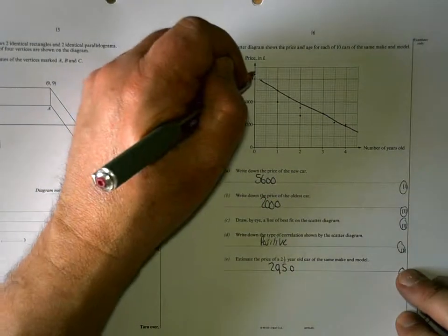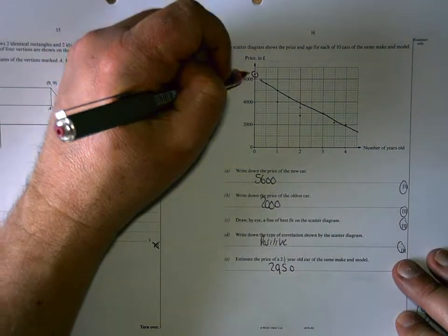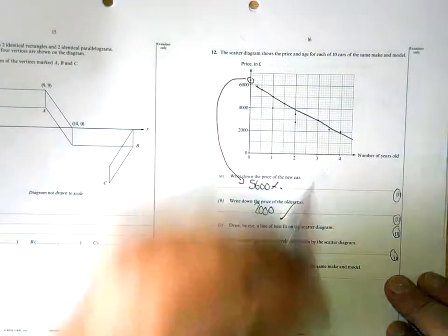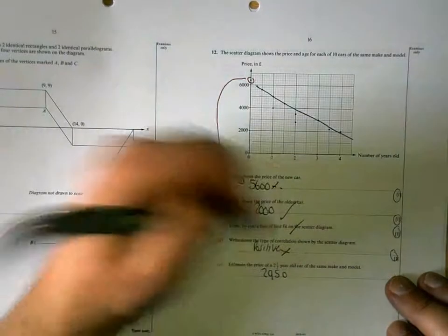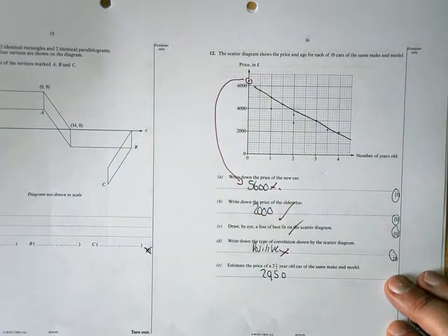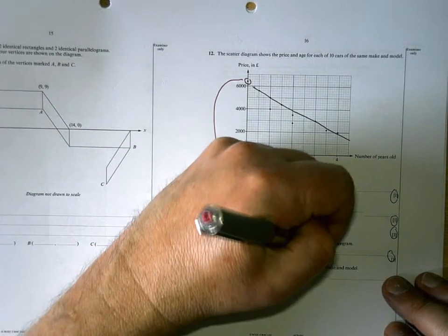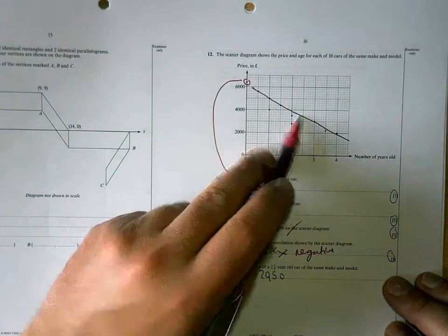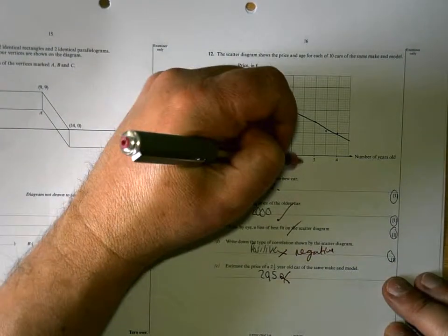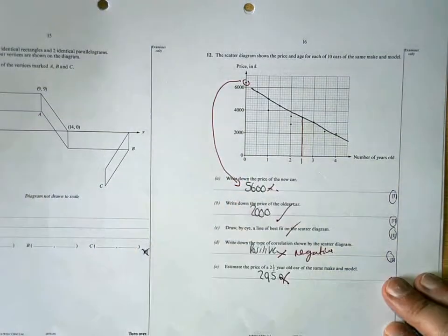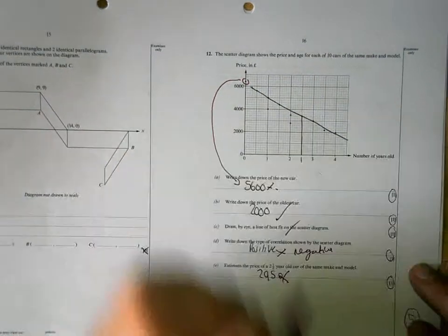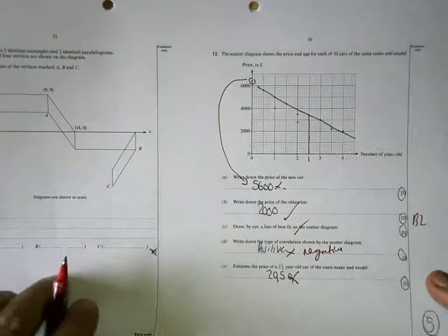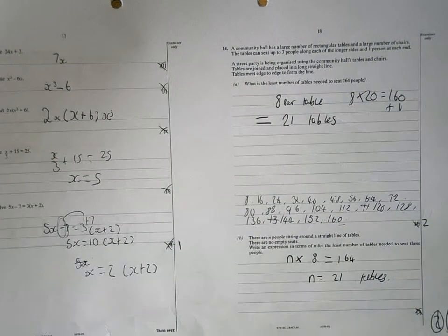The new car would have an age of zero. So that one's wrong. 2,000 is right. The scatter diagram is fine. It's not positive because it's going down. It's negative. And using your line of best fit. Two and a half years is above. It's going to be about 3,400. So only two marks on that. Which is not good. Because that's something you should be able to do pretty easily.